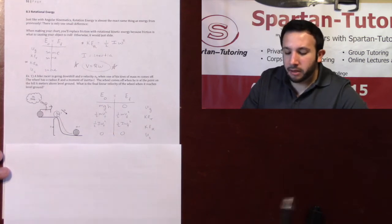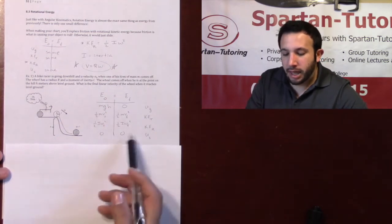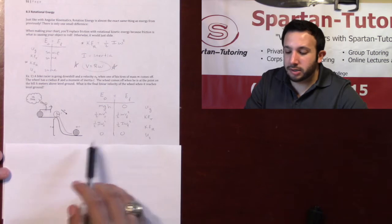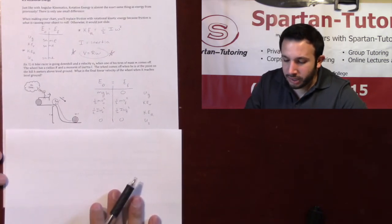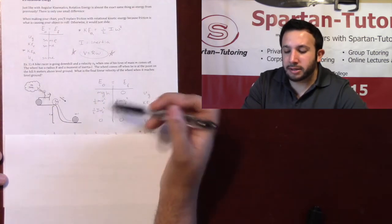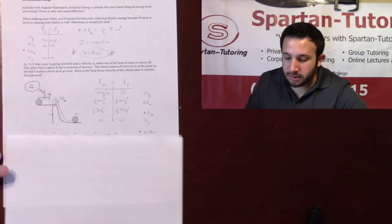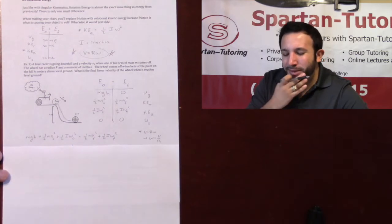Finally, for your spring, there is no spring, but even if it was just like we did in the past, just add either whether it is compressed or stretched initially or at the end. That was your one-half KX squared. Anyways, once we have this chart set up, you set all your E knots equal to your EFs. And so I come here, I have MGH, one-half MV naught squared, doing that. But